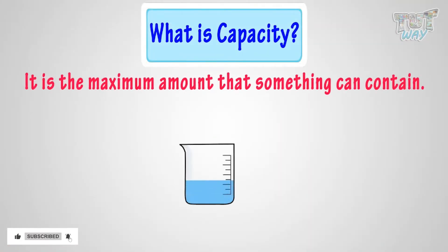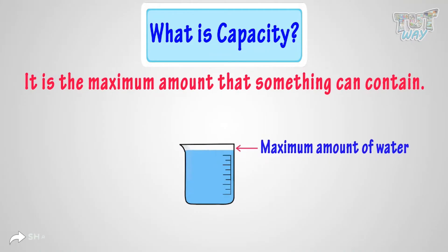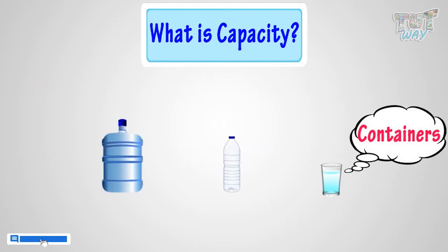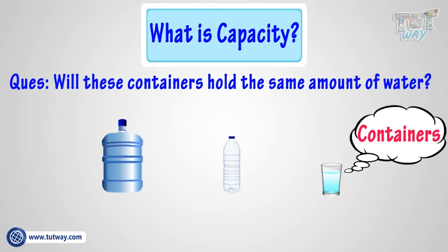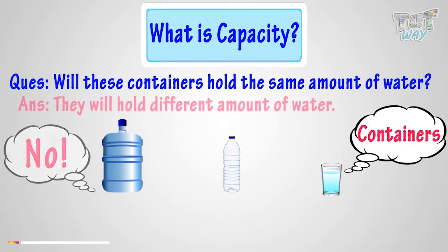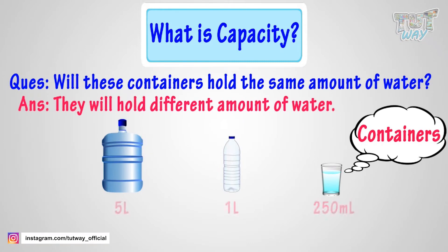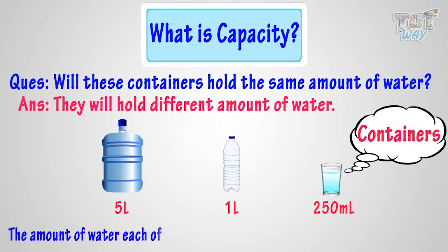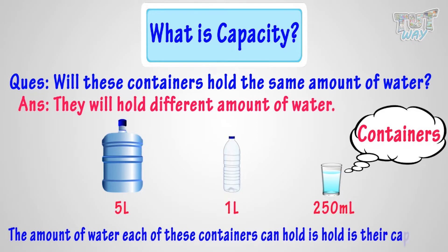Capacity is the maximum amount that something can contain. Here are a few containers. For each of these containers, will it hold the same amount of water? No, each of these containers will hold different amounts of water. And the amount of water each of the containers can hold is its capacity.